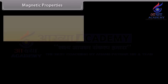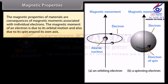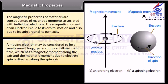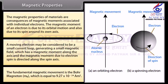Magnetic properties of materials are consequences of magnetic moments associated with individual electrons. The magnetic moment of an electron is due to its orbital motion and also due to its spin around its own axis. A moving electron may be considered to be a small current loop generating a small magnetic field. The fundamental unit of magnetic moment is the Bohr magneton, Mᵦ, which is equal to 9.27 × 10⁻²⁴ A·m².